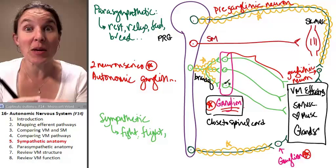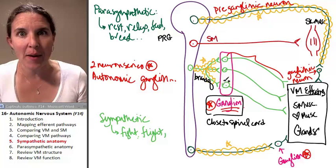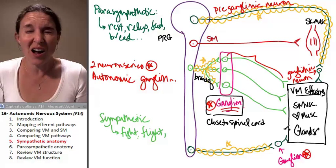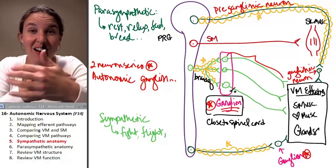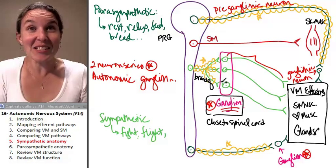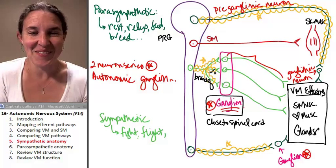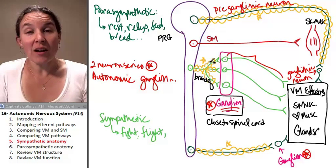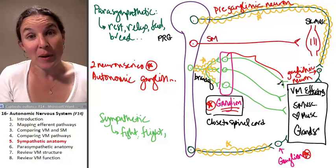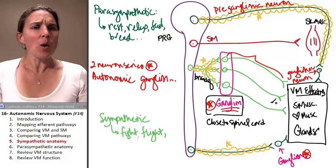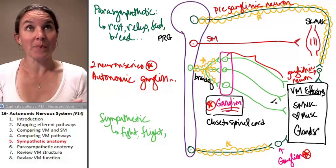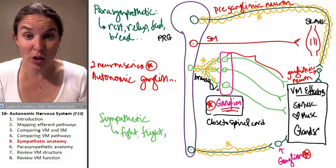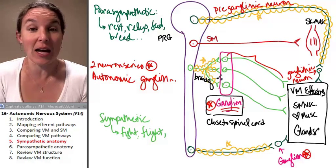50 ganglionic neurons have been activated and all of them are sending out their message to the effectors saying, bear, run, or hug. Bear's got a hug. It's a bear hug. So the branching aspect of the preganglionic neurons is something you're not going to see in the parasympathetic nervous system.